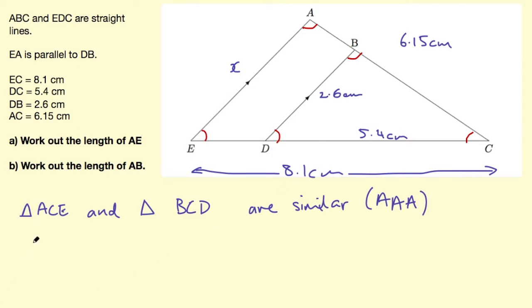Okay so to work out the scale factor we can divide the longer side by the shorter side. 8.1 divided by 5.4, that's exactly the same thing as dividing 81 by 54.